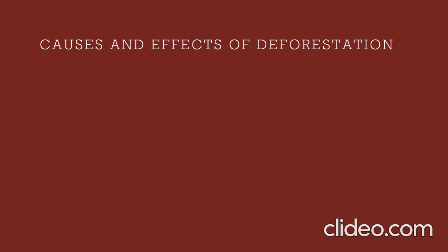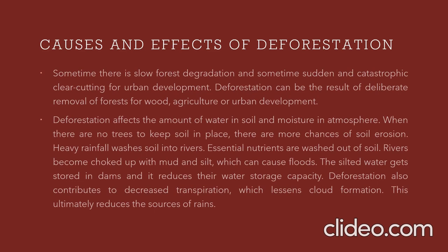Causes and effects of deforestation: sometimes there is slow forest degradation, and sometimes sudden, catastrophic clear-cutting for urban development. Deforestation can result from deliberate removal of forest for wood, agriculture, or urban development. It affects the amount of water in soil and moisture in the atmosphere. When there are no trees to keep soil in place, there are more chances of soil erosion. Heavy rainfall washes soil into rivers, essential nutrients are washed out, rivers become choked with mud and silt causing floods, and the silted water stored in dams reduces their water storage capacity. Deforestation also contributes to decreased transpiration, which lessens cloud formation and ultimately reduces rainfall.